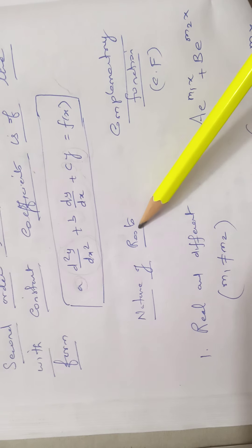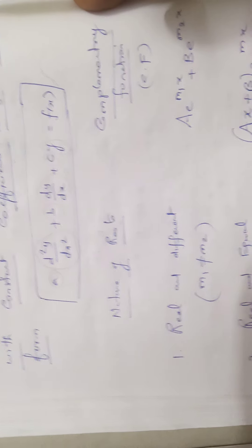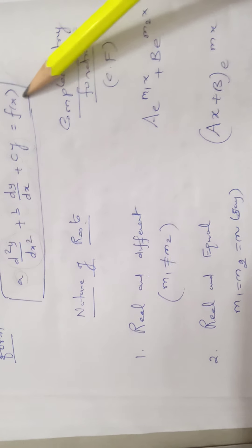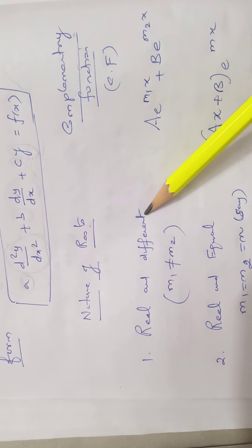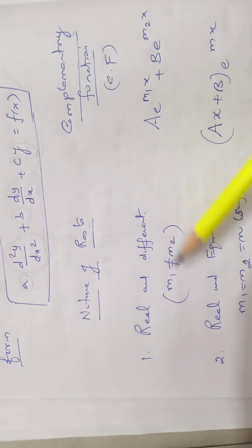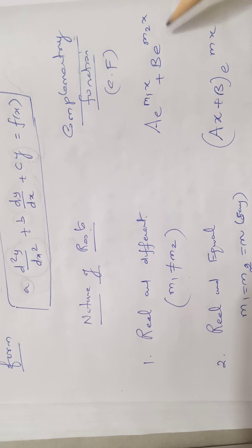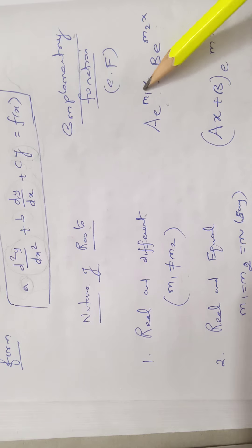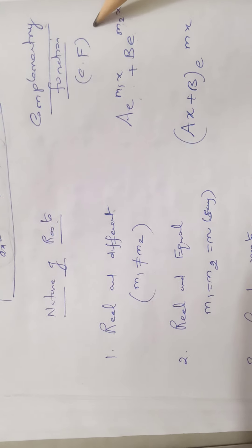The nature of roots and complementary function of the given second order linear differential equation. First case: real and different roots. Suppose the two roots are different; we apply the complementary function a·e^(m₁x) + b·e^(m₂x). This is the form.